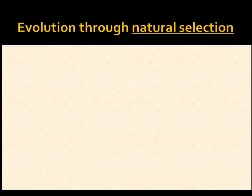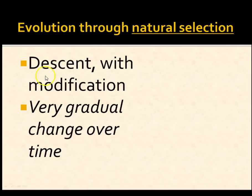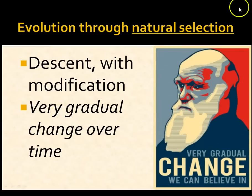Darwin's idea was natural selection: creatures change over time through a process of descent with modification — like your descendants, your offspring — with very gradual change over time. That's the idea behind evolution.